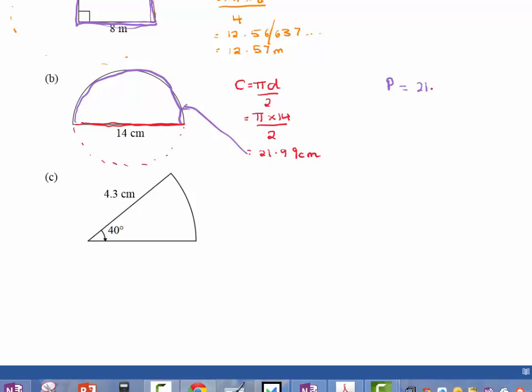so it's the curved part plus the diameter. So it's 21.99 plus 14. And we do that on our calculators, and we're going to get 35.99 centimeters. And there's my final answer.